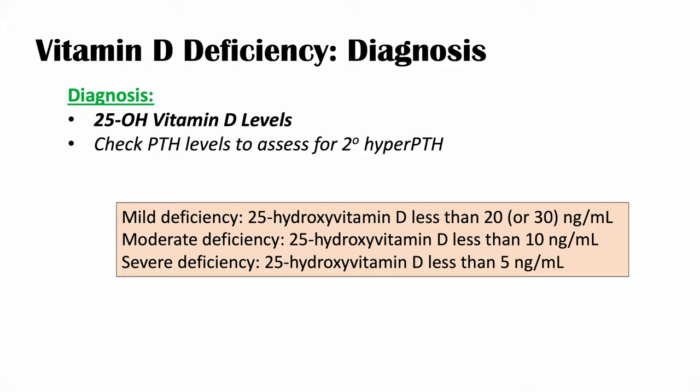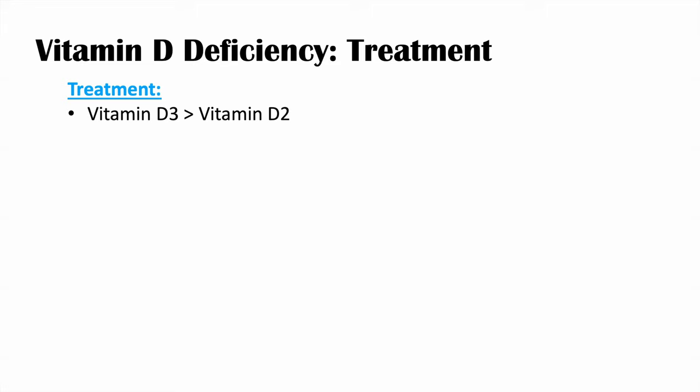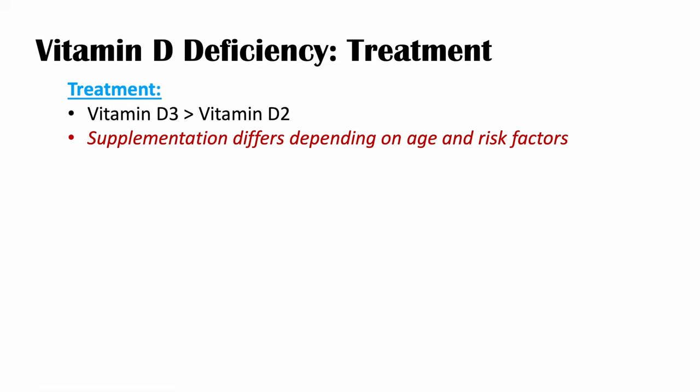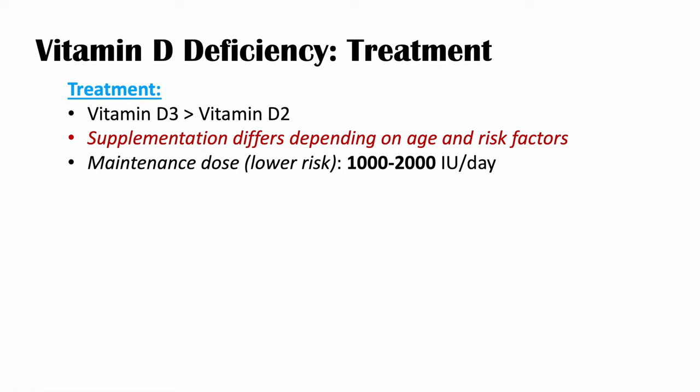Treatment is about replacing vitamin D. Vitamin D3 has been shown to replete vitamin D levels quicker than vitamin D2, so vitamin D3 is most often used. The amount of supplementation differs depending on age and risk factors. Once levels are normal, the maintenance dose for lower-risk patients is 1,000 to 2,000 international units per day.